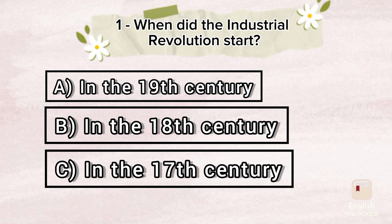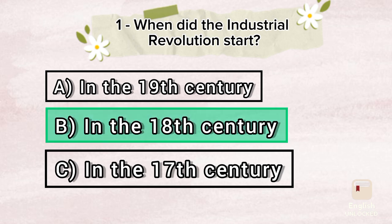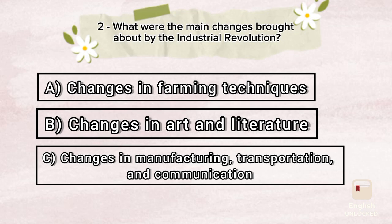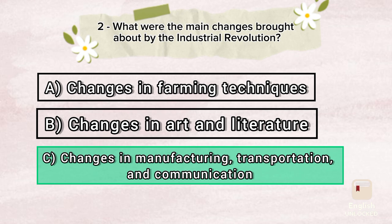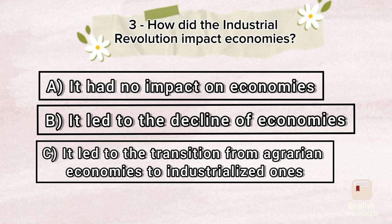Choose the correct answers. When did the Industrial Revolution start? A. In the 19th century. B. In the 18th century. C. In the 17th century. What were the main changes brought about by the Industrial Revolution? A. Changes in farming techniques. B. Changes in art and literature. C. Changes in manufacturing, transportation, and communication. How did the Industrial Revolution impact economies? A. It had no impact on economies. B. It led to the decline of economies. C. It led to the transition from agrarian economies to industrialized ones.